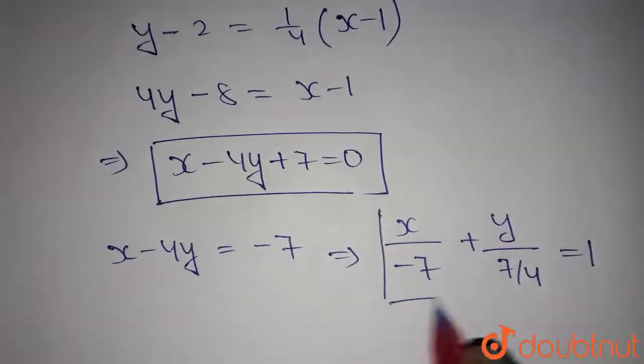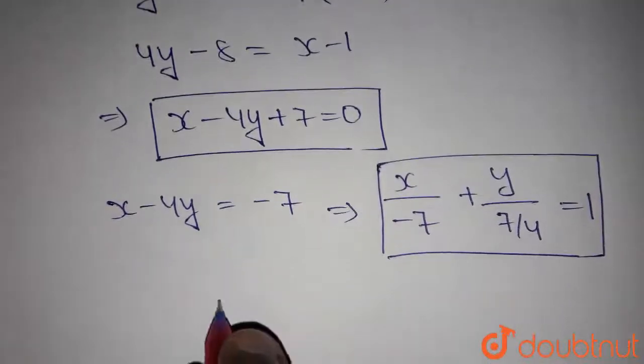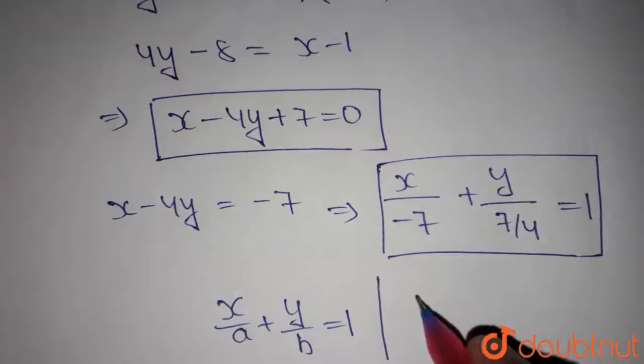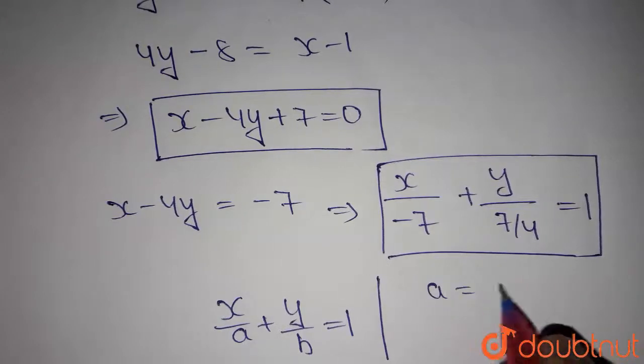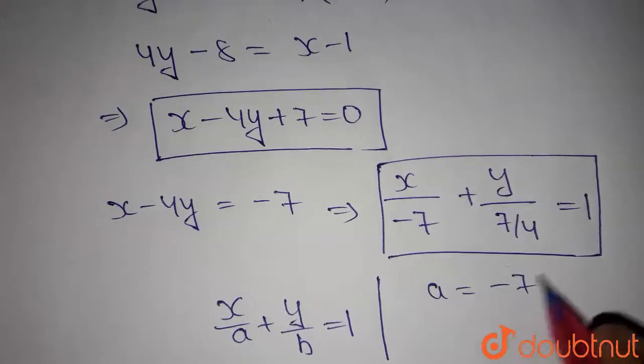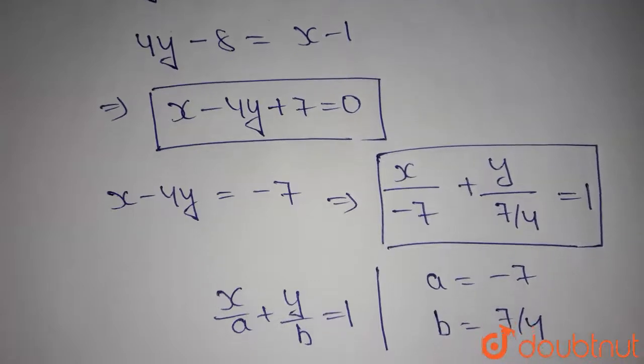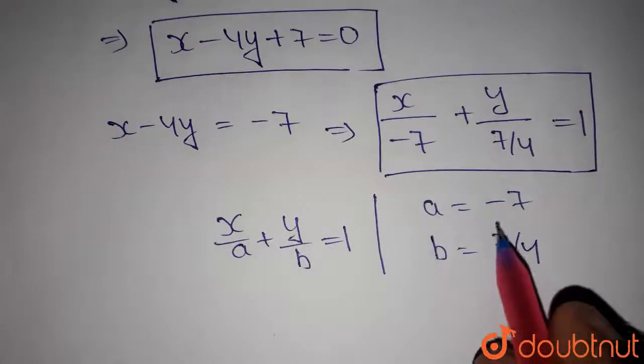So, compare this equation with the general form which is nothing but x by a plus y by b is equals to 1 where a is x intercept and b is y intercept. So, by comparing these two, we get a as minus 7 and b as 7 by 4. Now, these are the intercepts on the x and y axis.